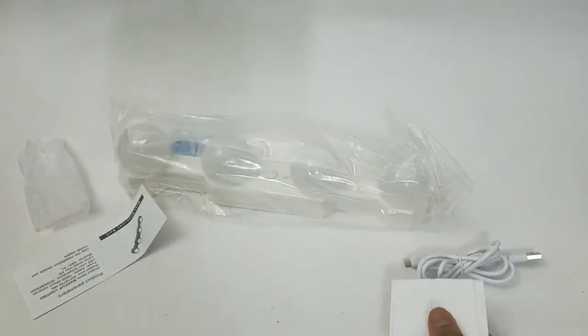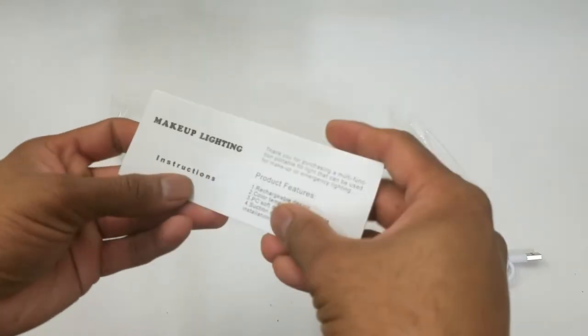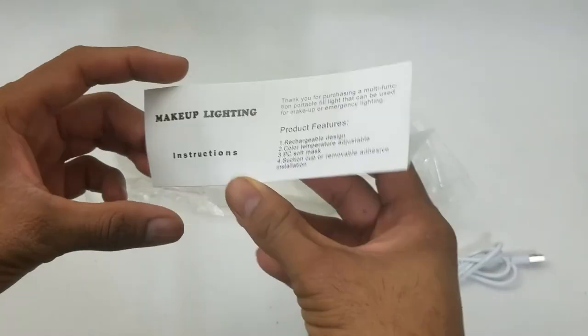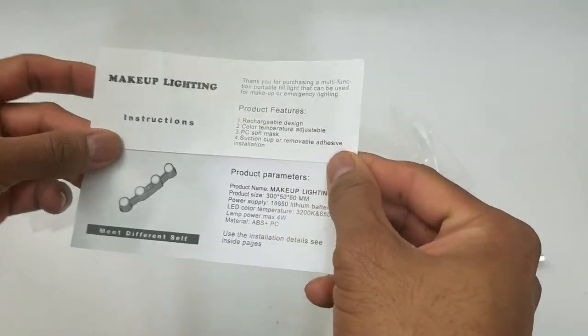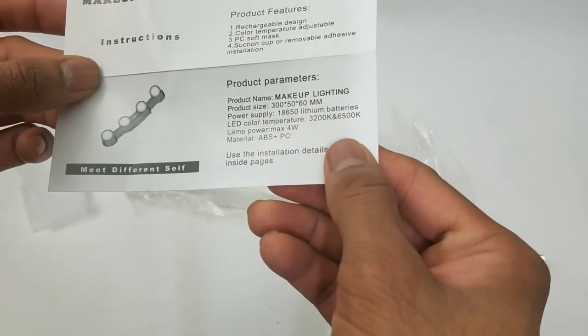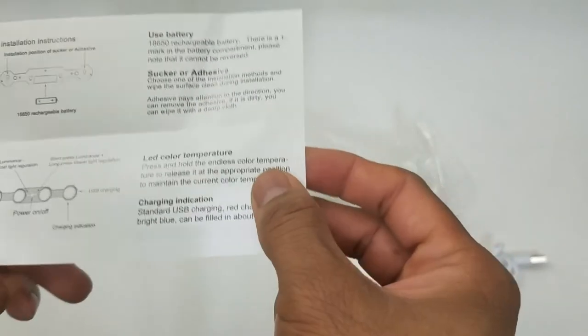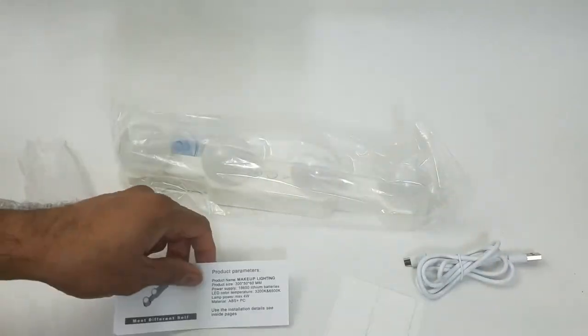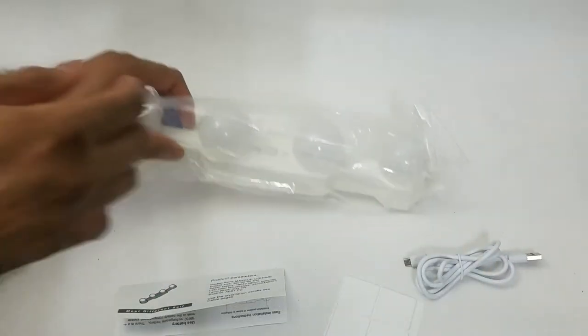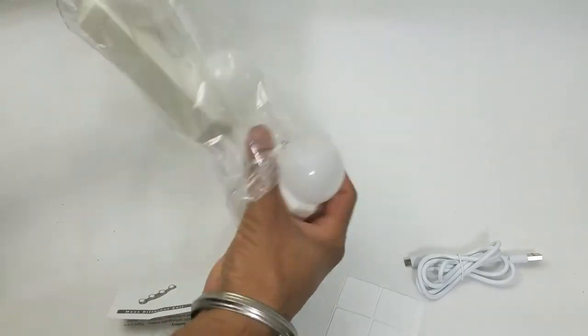It does come with a basic instruction manual. These are the product dimensions, and it has a built-in rechargeable battery, so you don't have to worry about running out of juice. You can just recharge it. Now let's take out the light bulbs.